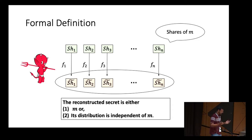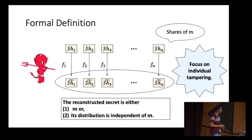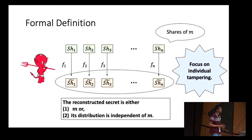So either the reconstructed secret is the same message, or its distribution is completely independent of the starting message. In this work, we focus on the individual tampering setting, where each FI acts on an individual share SHI. It's possible to consider more expressive tampering functions which take in two or more shares together, but here we restrict ourselves to individual tampering.